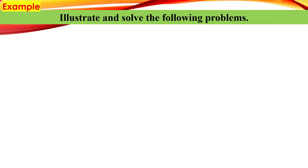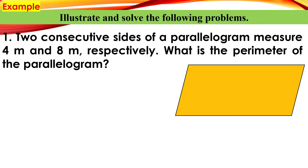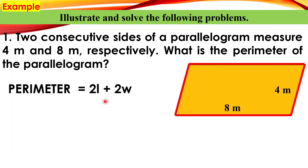Example number one: illustrate and solve the following problem. Two consecutive sides of a parallelogram measure 4 meters and 8 meters respectively. What is the perimeter of the parallelogram? We have: perimeter is equal to 2L plus 2W.